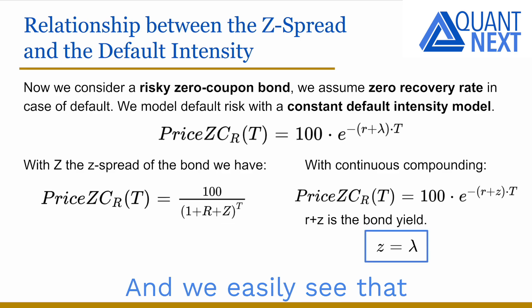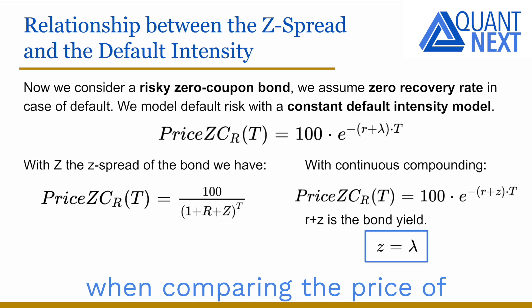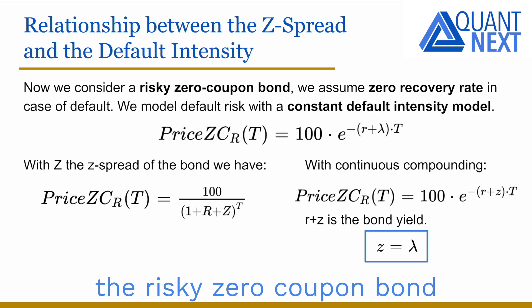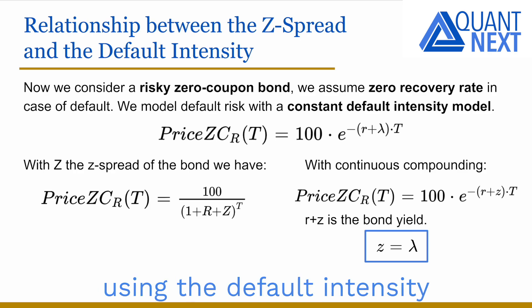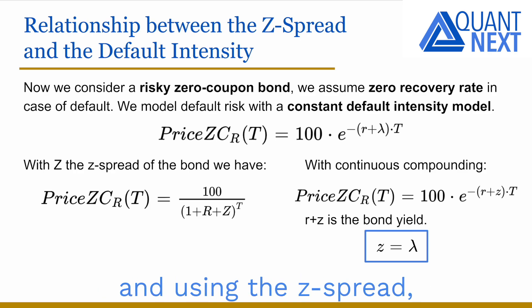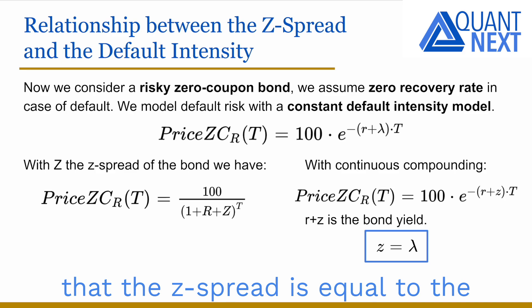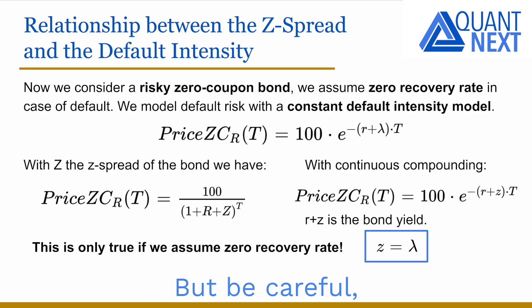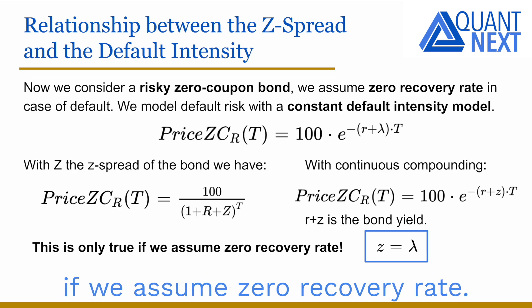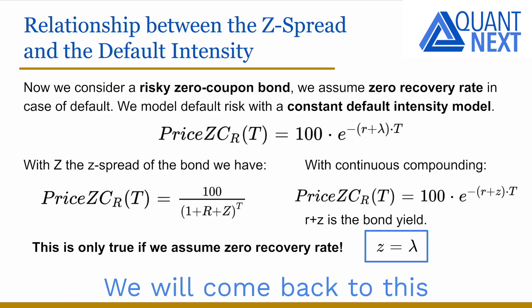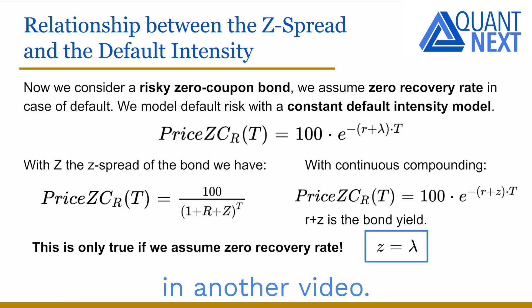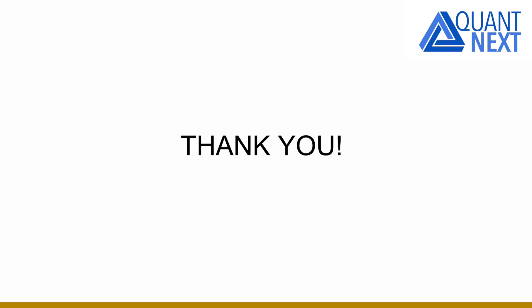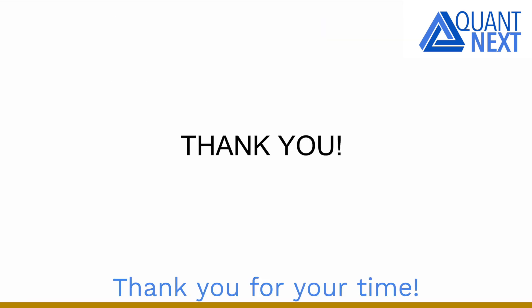We can easily see that in this framework, when comparing the price of the risky zero coupon bond using the default intensity and using the z-spread, the z-spread is equal to the default intensity. But be careful — this is only true if we assume zero recovery rate. We will come back to this in another video. Thank you for your time!